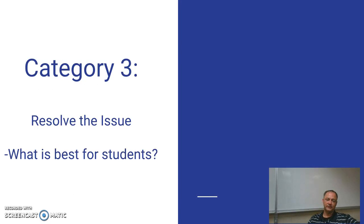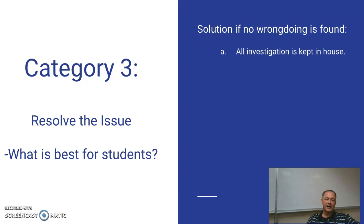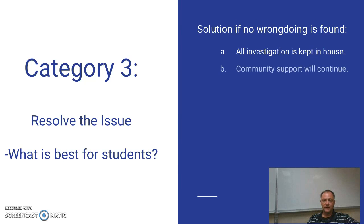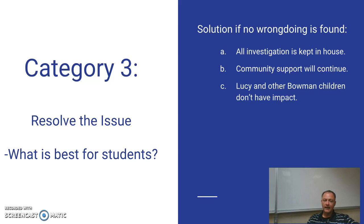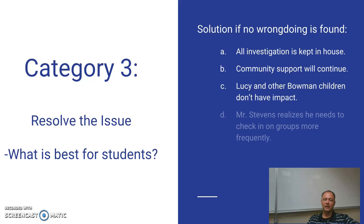How do I resolve the issue — what is best for students? Ideally, no wrongdoing is found and nobody ever knows anything. All of the investigation would be done behind closed doors. Even though it is not good to take $50, I don't think $50 is worth raising a big public outcry against a family in your school. By keeping things behind closed doors, we maintain the positive environment of our school and continue to seek community support, and it's also good for Lucy and the other Bowman children.